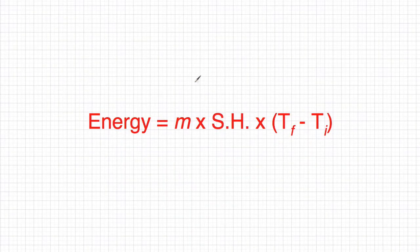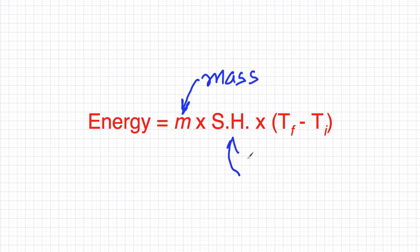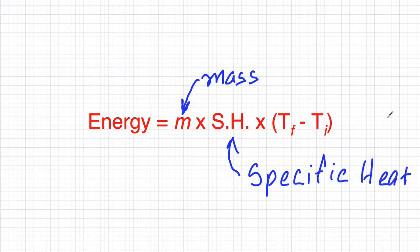Well, here we are. And this is the equation that we need to know to be able to solve calorimetry problems. And it goes something like energy is equal to the mass, M equals the mass times the specific heat, times T final minus T initial. This is delta T. This is the change in temperature.